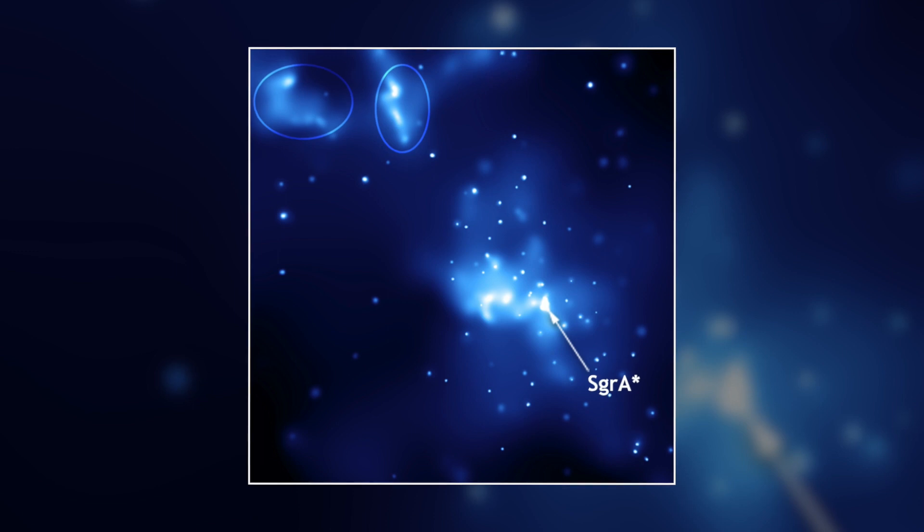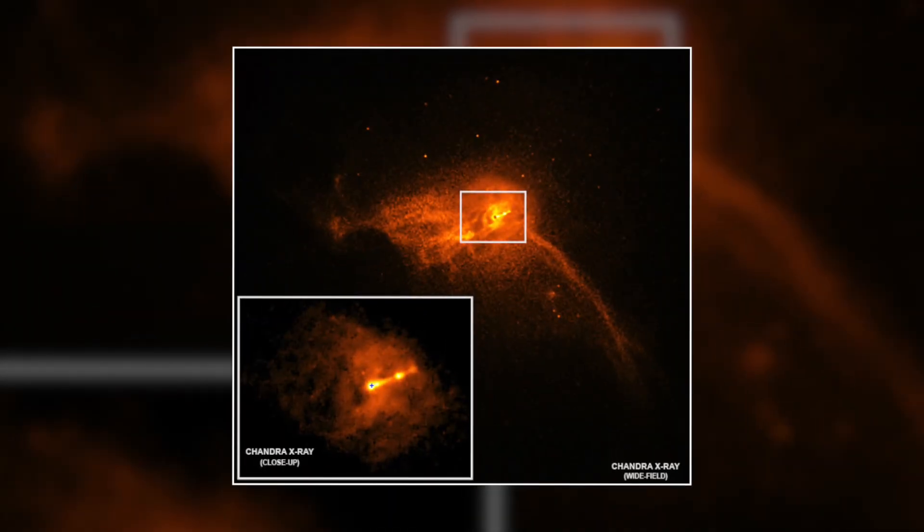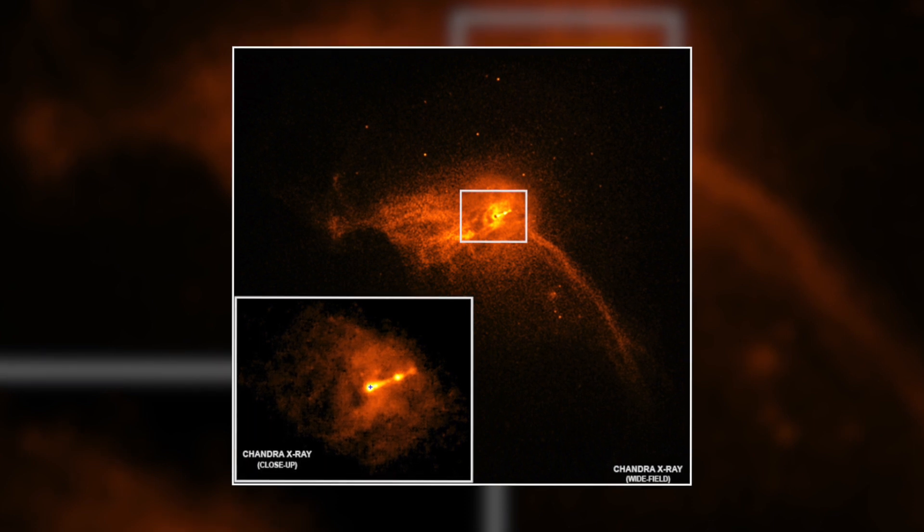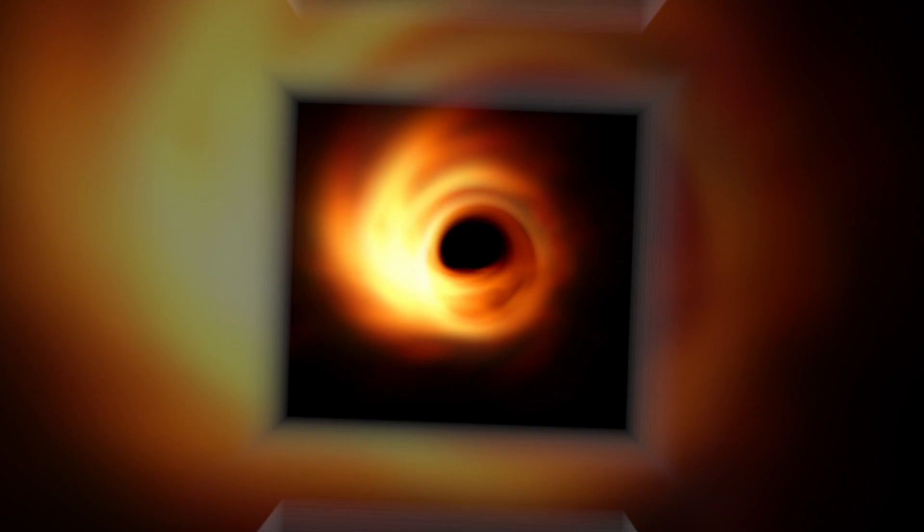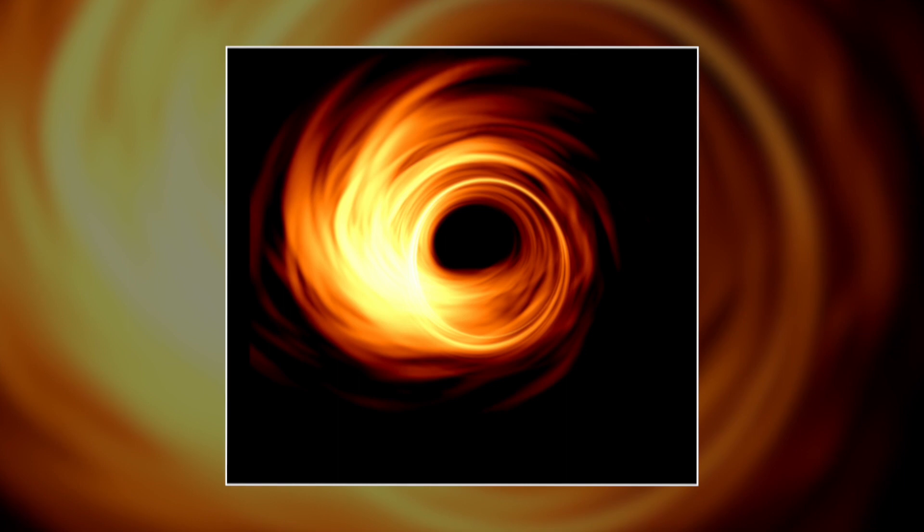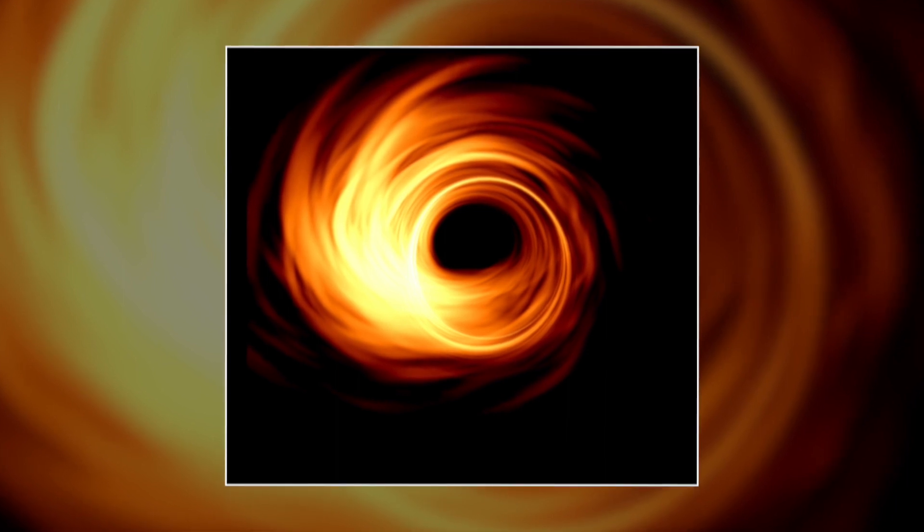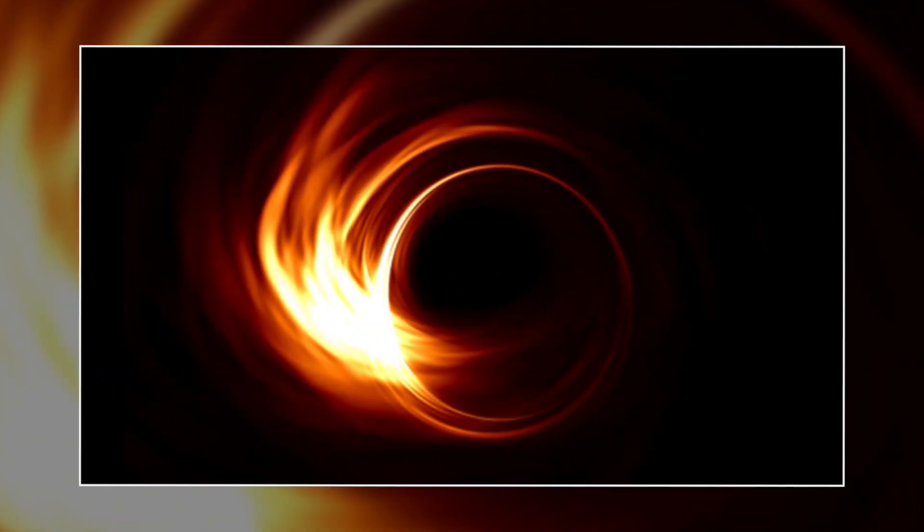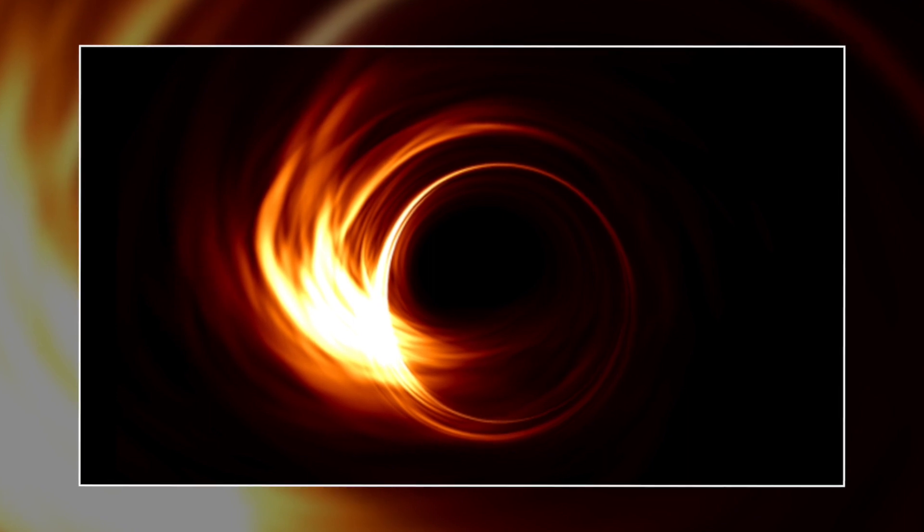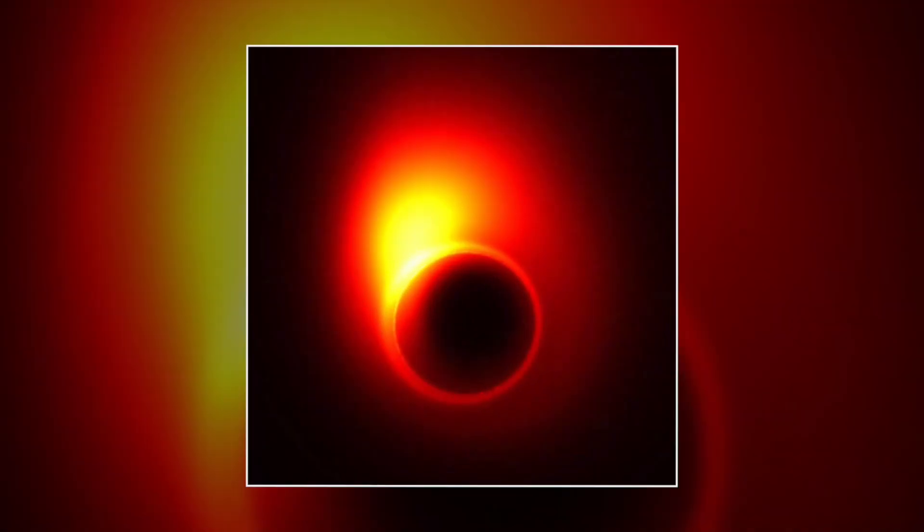It turns out that Sagittarius A is elusive for multiple reasons. The first picture we took was of M87, which is much, much larger than Sagittarius A, and that makes a difference. Sagittarius A is a thousand times smaller than M87, still a monster, but a thousand times smaller. And as a consequence, it's actually evolving a thousand times faster, explained Professor John Karlstrom.